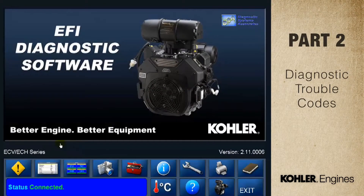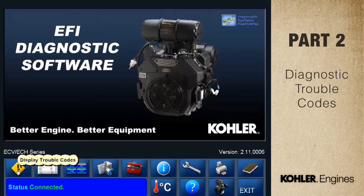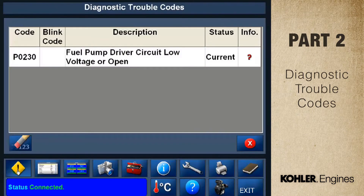Let's take a look at diagnostic trouble codes. Each button on the control panel has a special diagnostic or information capability. Let's look at the trouble code button — I call it the money button because it saves you a lot of time. You can check the user manual for trouble codes, but the button is much quicker.